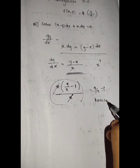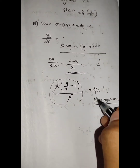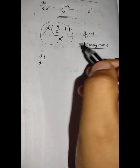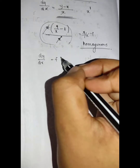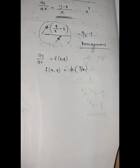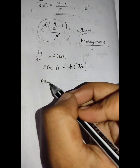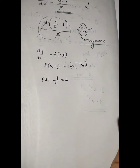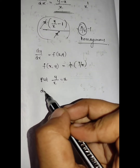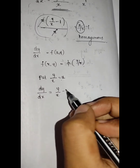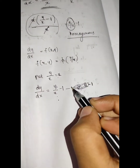The next step is to write dy/dx as f of y/x. The equation is a function of y/x. We substitute y/x equal to u, so y equal to ux. Then dy/dx equals x du/dx plus u. This gives us dy/dx equal to y/x minus 1, which is equation number 1.